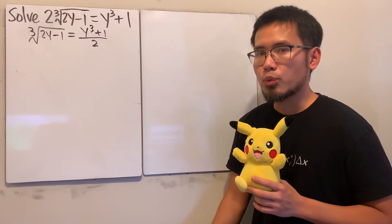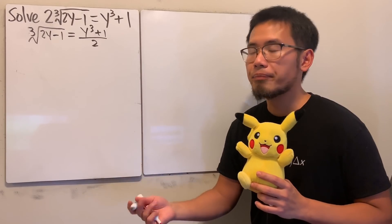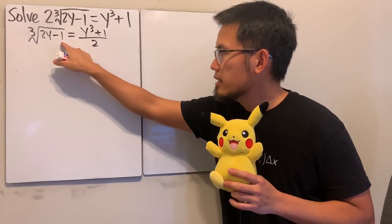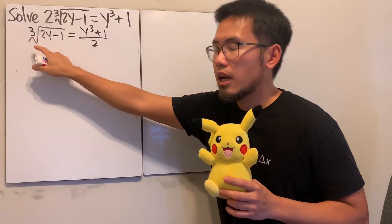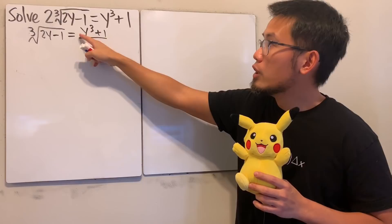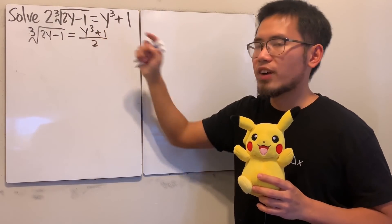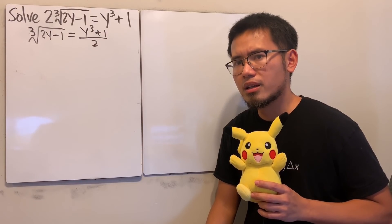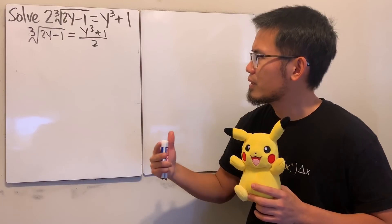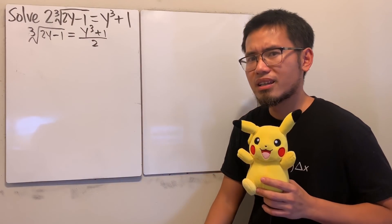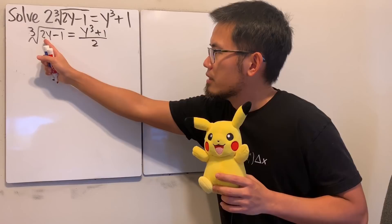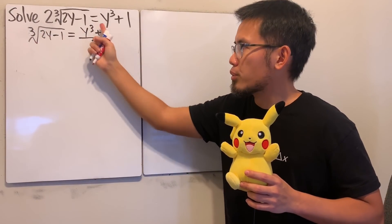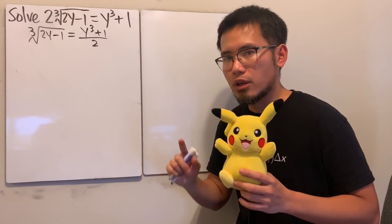Let's investigate this a little bit more and identify what's going on on each side. On the left-hand side, we have 2 times y, then minus 1, then take the cube root. On the right-hand side, we have y cubed, then plus 1, then divided by 2. Does that sound similar? Yes — because in fact the procedure happening on the left is exactly the opposite of the procedure on the right. Namely, they are the inverse of each other.